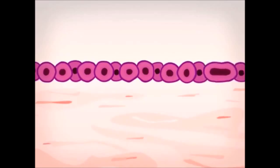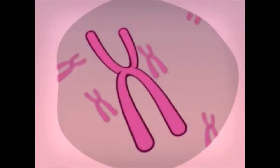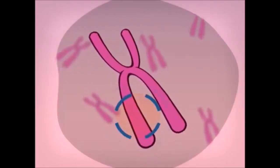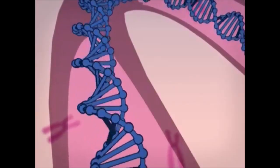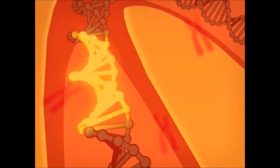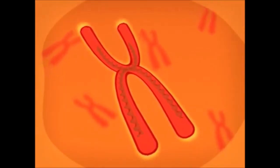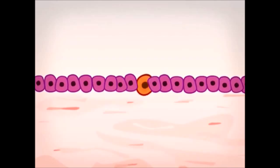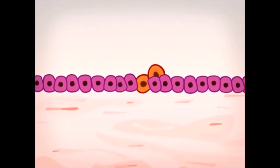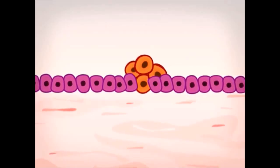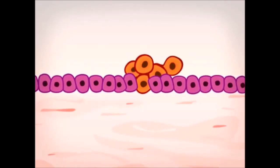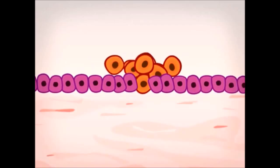Every cell is therefore programmed to multiply and die. This ordered but complex program is controlled by the center of the cell — the nucleus — which contains chromosomes containing many genes made up of DNA. Sometimes some of these genes undergo a change. The nucleus then sends out abnormal orders and the cell goes wrong. It multiplies uncontrollably and takes on a life of its own, and each new cell produced contains the same defect. The cells proliferate chaotically and form a tumor.